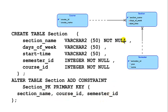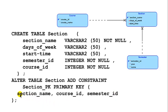Because section has key migrations, it gets its own key plus keys from related tables. Therefore the primary key is course ID plus section name plus semester ID, and that is exactly what the data modeler has generated.